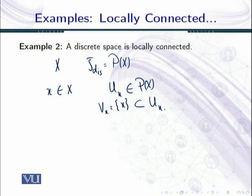Now here I want to point out that if you recall, we saw earlier that a discrete space on a set with more than one element is not connected — we saw this in a previous example. But here we have seen that it is locally connected. So it means that it is not necessary that if a space is not connected, it is also not locally connected.